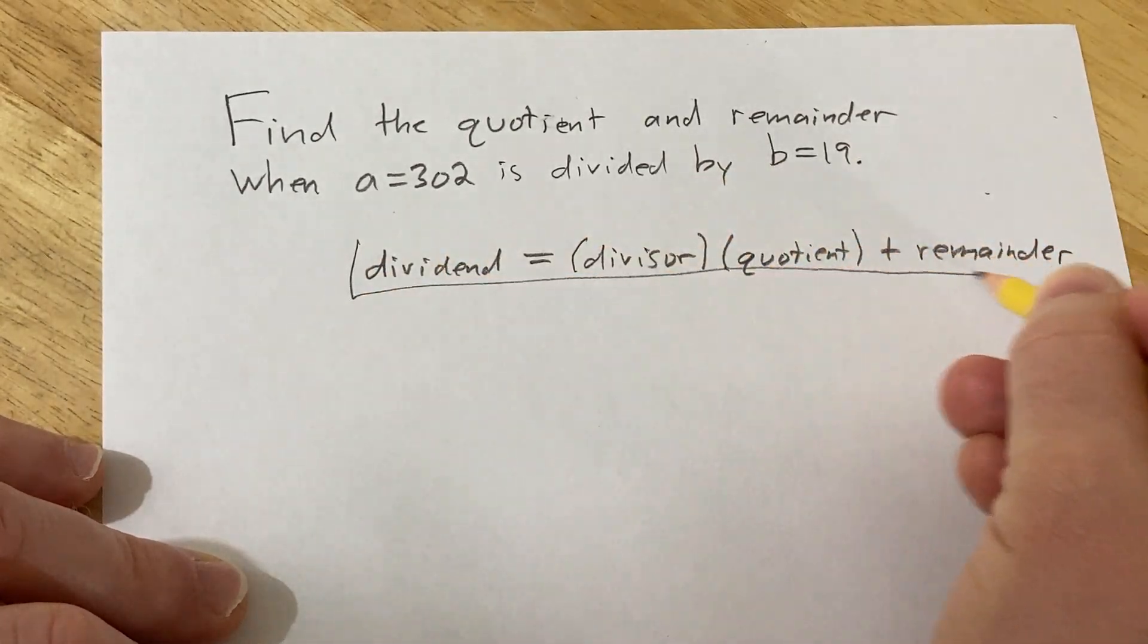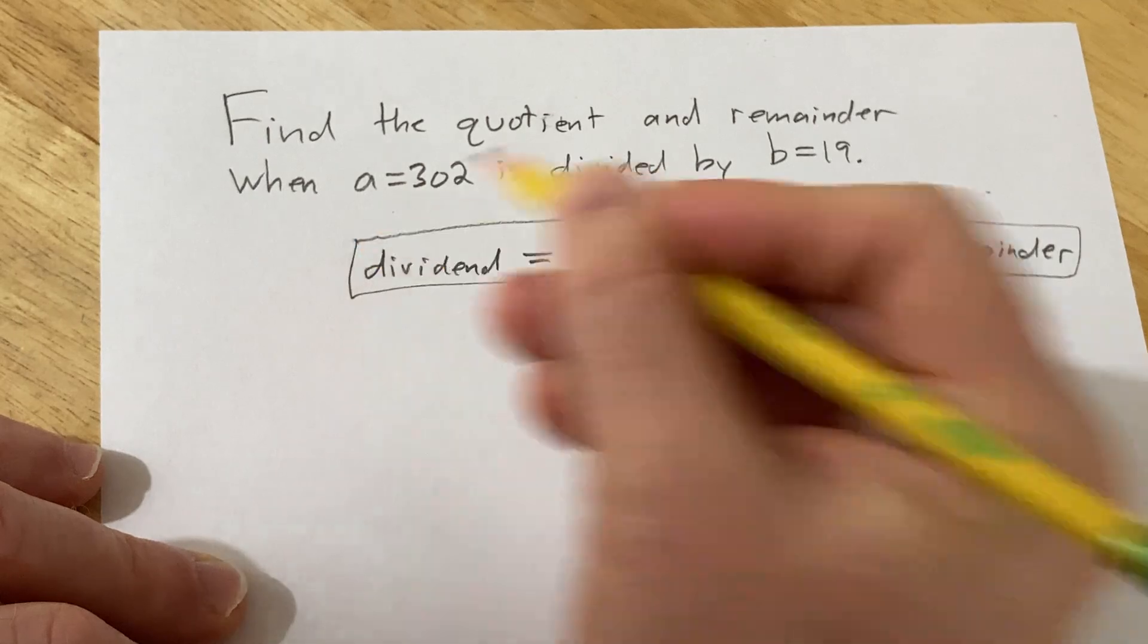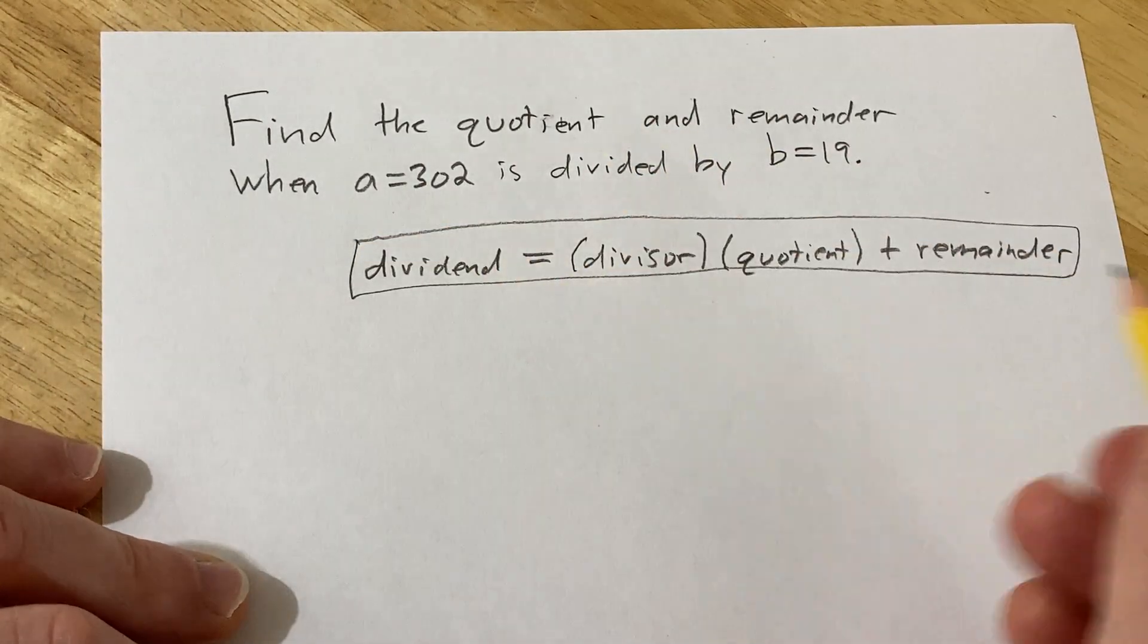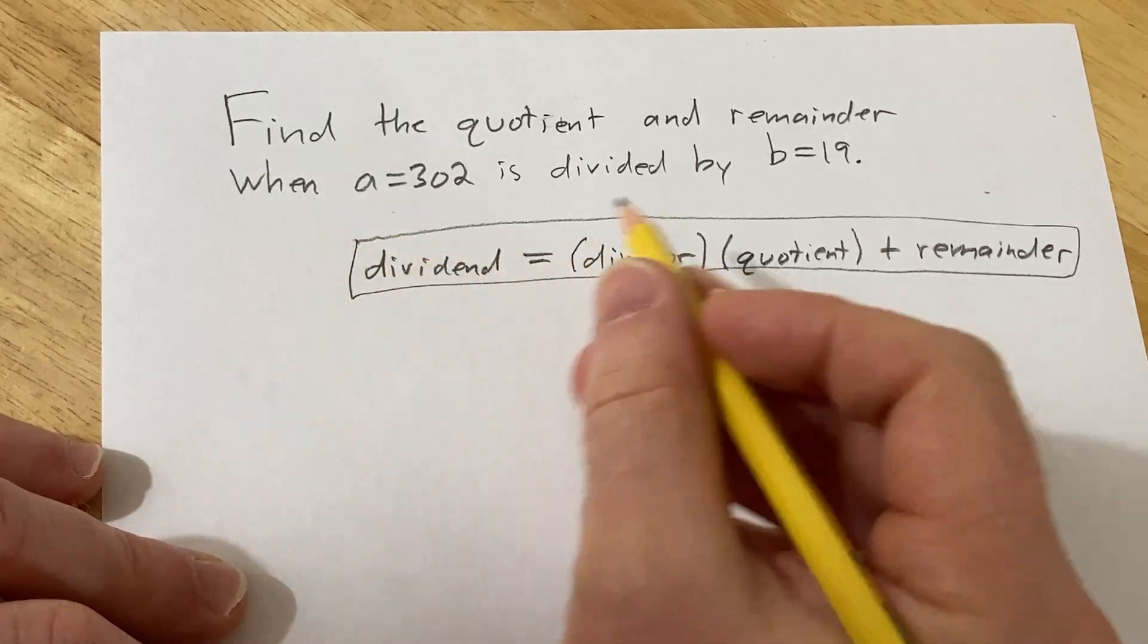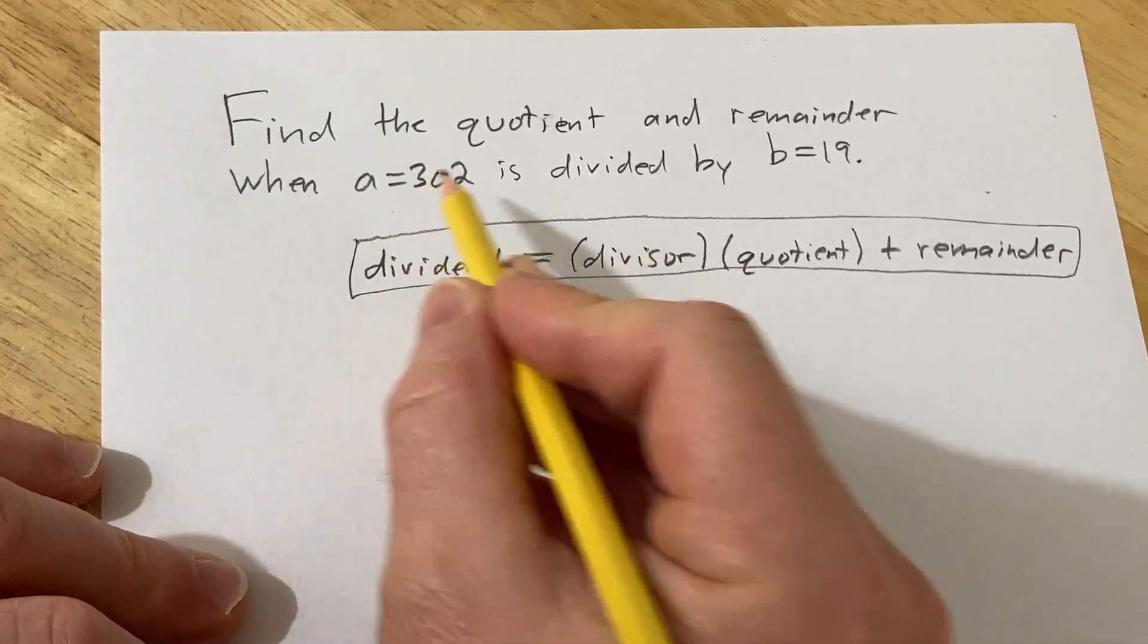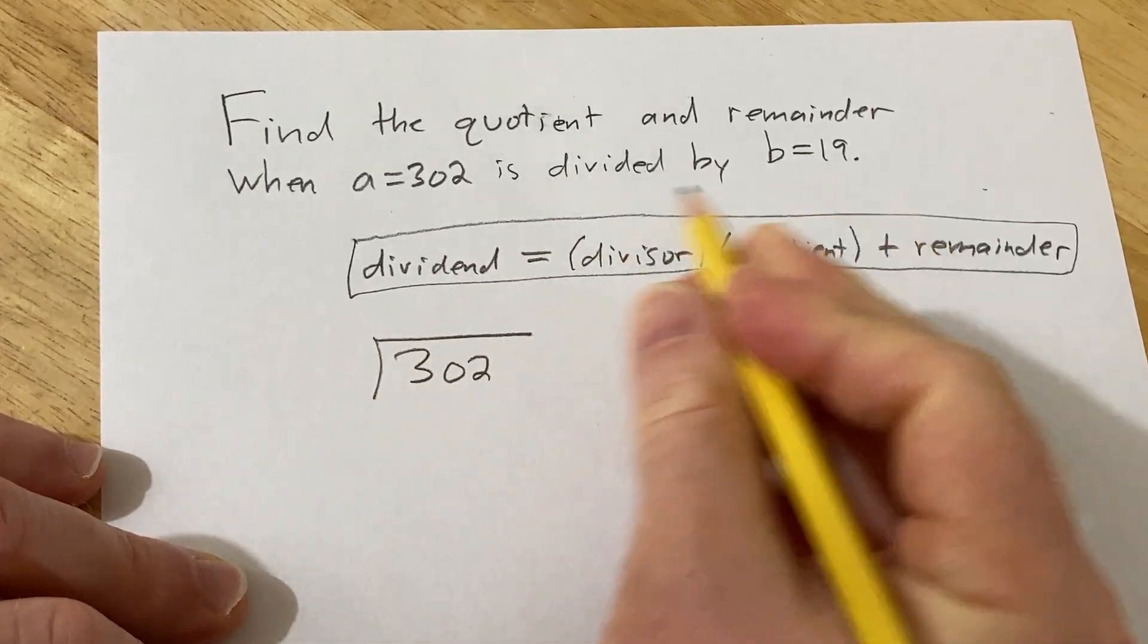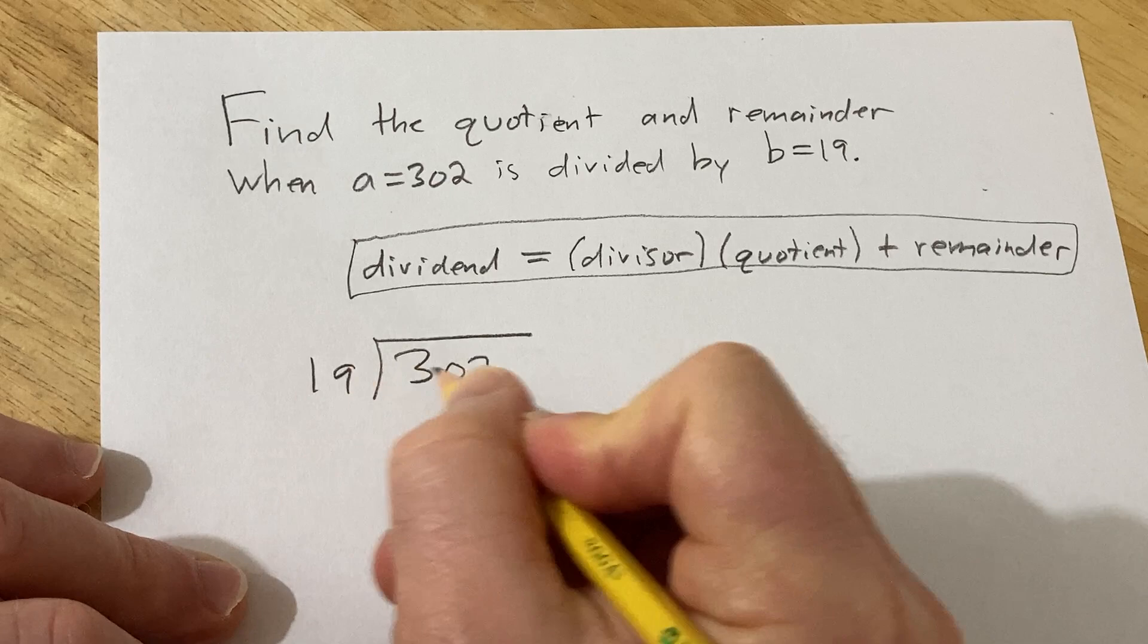There is a theorem called the division algorithm, which basically says that we can divide and that this is possible. We're just going to do old-school division in this problem. We've got a = 302, and 19 is being divided into that.